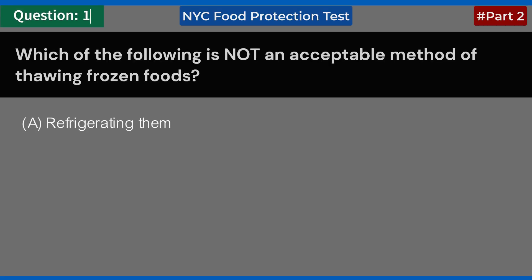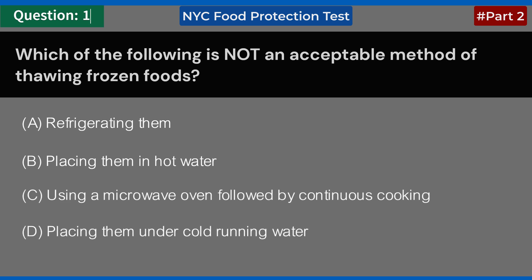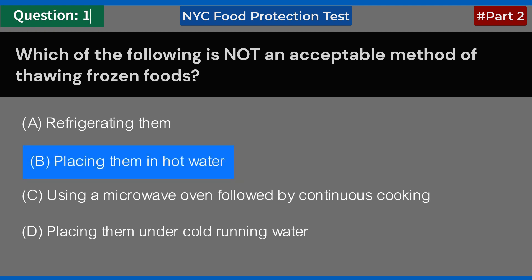Which of the following is not an acceptable method of thawing frozen foods? A. Refrigerating them. B. Placing them in hot water. C. Using a microwave oven followed by continuous cooking. D. Placing them under cold running water. Answer: B. Placing them in hot water.